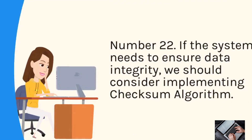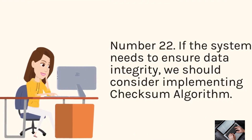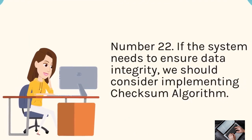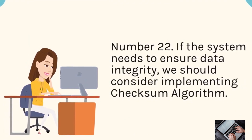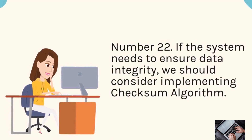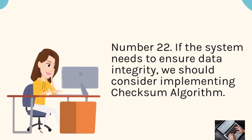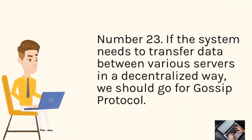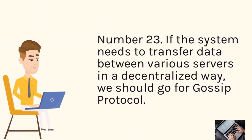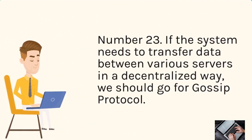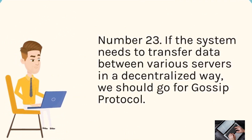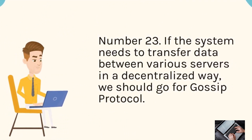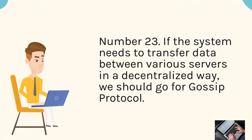Number 22: If the system needs to ensure data integrity, we should consider implementing a checksum algorithm. Number 23: If the system needs to transfer data between various servers in a decentralized way, we should go for gossip protocol.